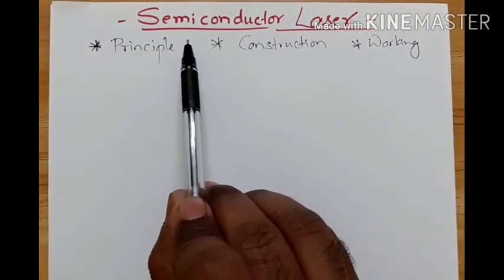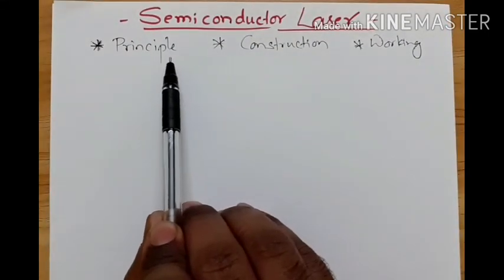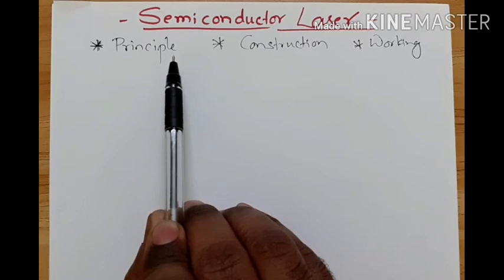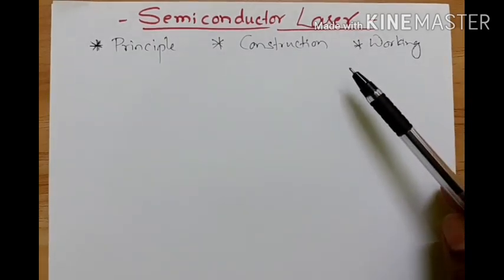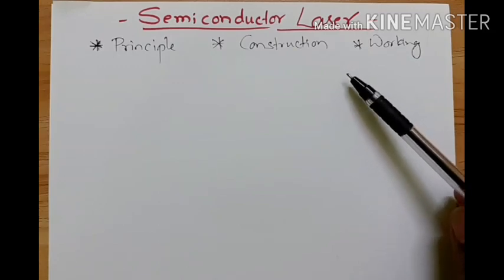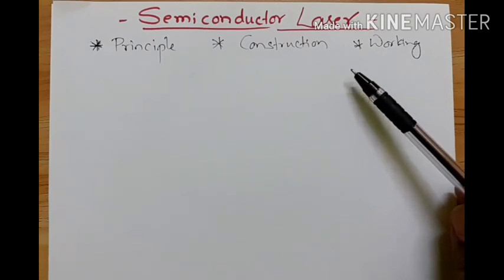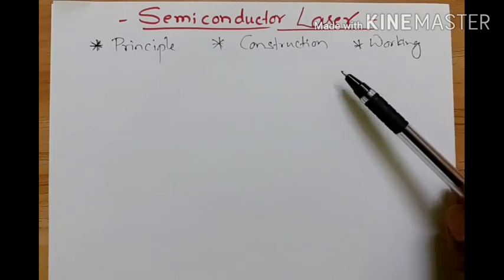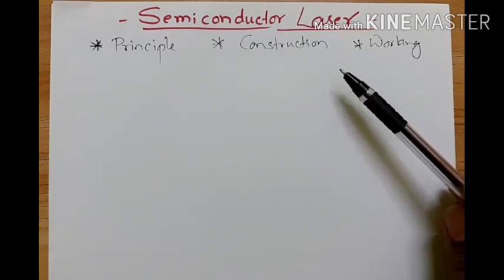We'll move ahead with the semiconductor laser, covering its principle, construction, and working. Nowadays we use semiconductor lasers most commonly in communication purposes, in OFC cables, in CD and DVD drives to burn discs, and to measure barcodes in supermarkets. This laser is very tiny, low cost, compact, and we are not using any gases. It is also used in toys.